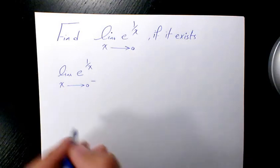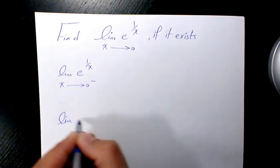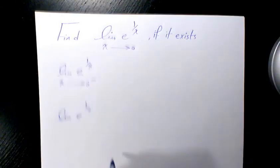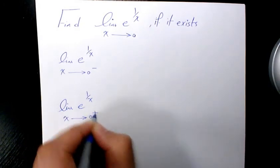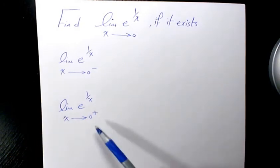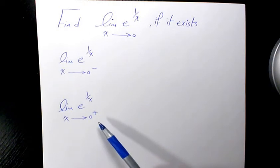You also need to find out the limit of e^(1/x) when x is approaching 0 positive. It means those numbers slightly greater than 0 and very close to 0. This is called right limit.